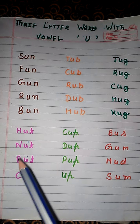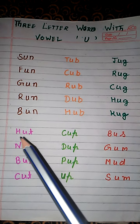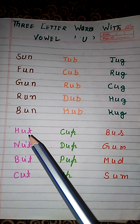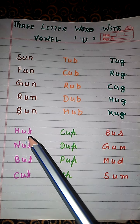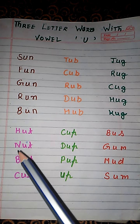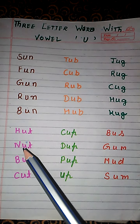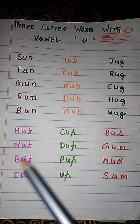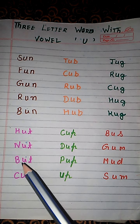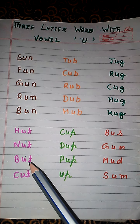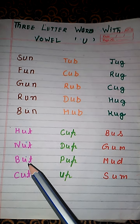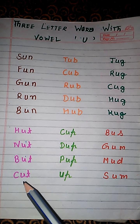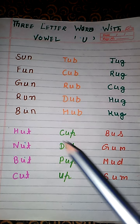Let's see some more words. H, U, G. Hut. N, U, G. Nut. B, U, G. Butt. K, U, G. Cut.